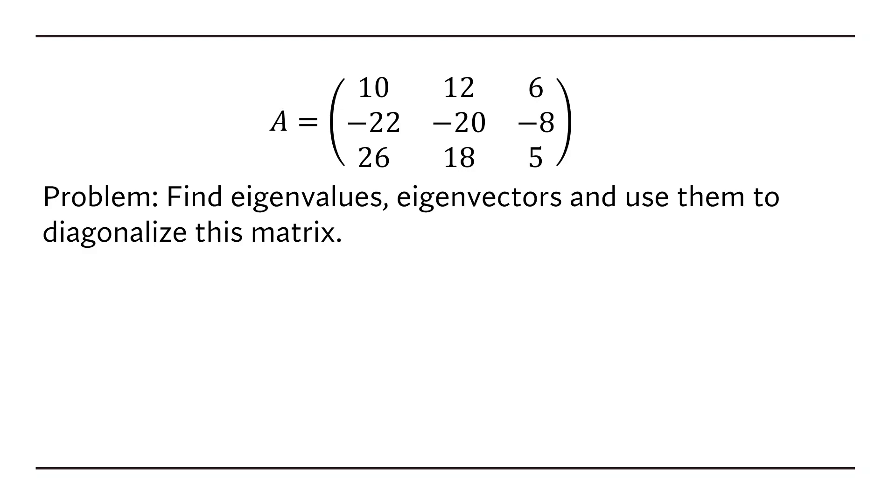So let's say you're given this matrix A as 10, 12, 6, negative 22, negative 20, negative 8, 26, 18, and 5. The question is to find the eigenvalues, eigenvectors, and use them to diagonalize this matrix.